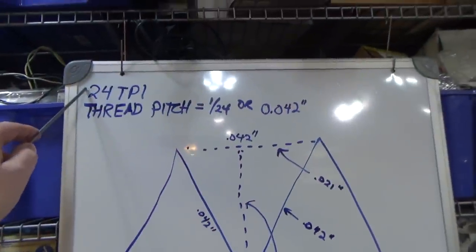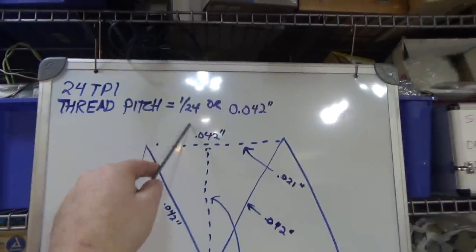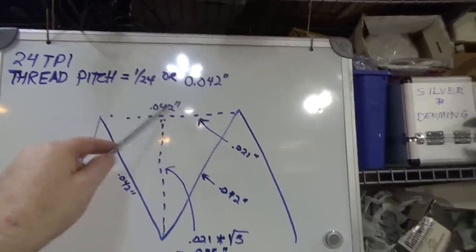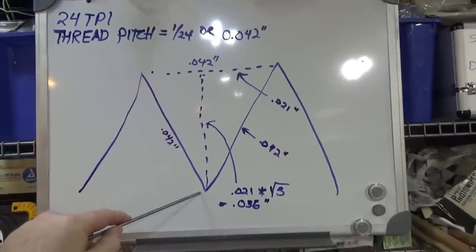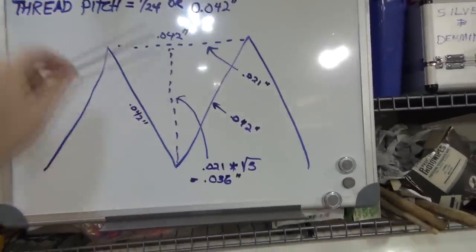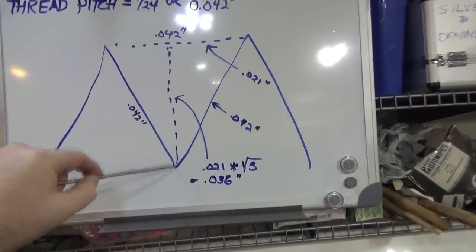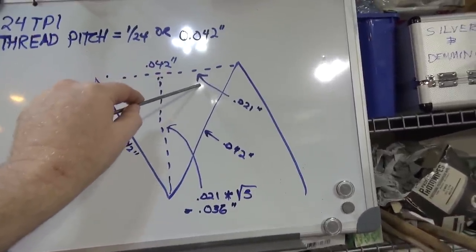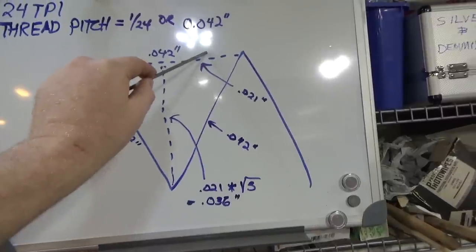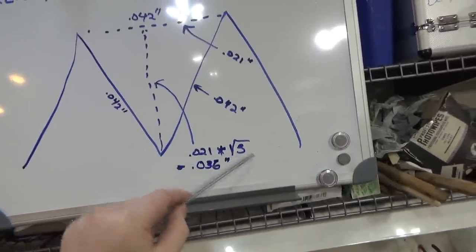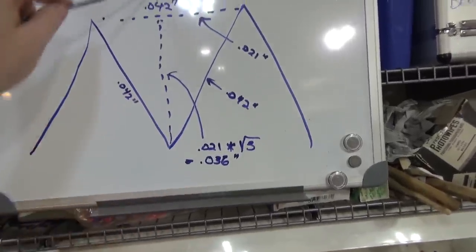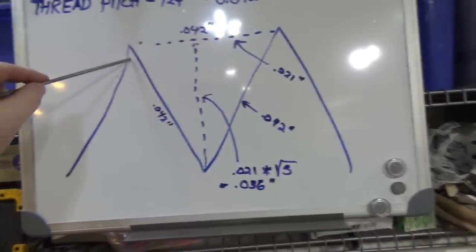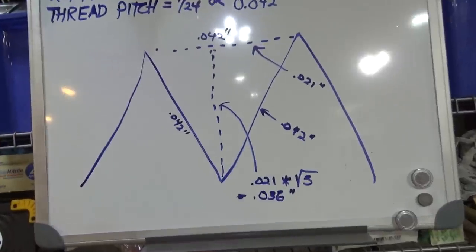5/16-24 means 24 threads per inch. The thread pitch is 1/24 or 0.042 inches — the spacing between peaks is 0.042 inches, which also means both sides of the triangle are 0.042. Drop a vertical to figure out how far the cutting tool needs to go in: if the side is 0.042, then half that side is 0.021, and the height is √3 × 0.021 = 0.036 inches. So my cutting tool needs to go in roughly 0.036 inches, then I cut off the peaks with a file.